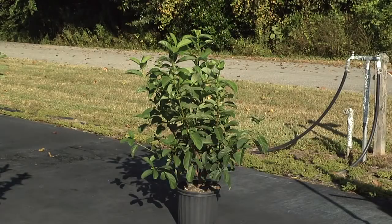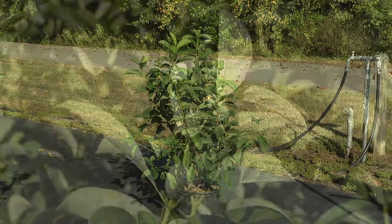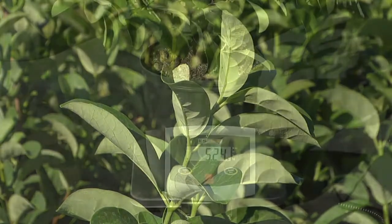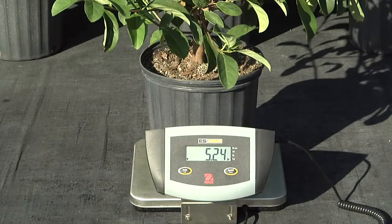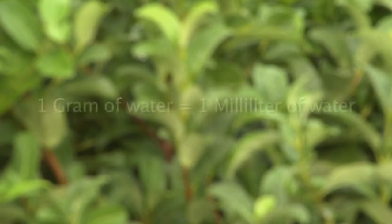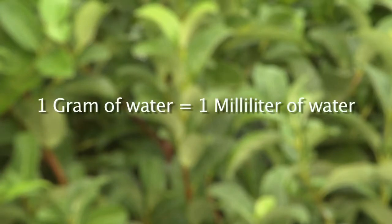Place plants in a location where they will not be irrigated. When plants begin to wilt, indicating the substrate is dry, weigh each of the same plants again. Subtract the weight of each plant with dry substrate from the weight of each plant with moist substrate and average the values. The difference in weight is the amount of available water.